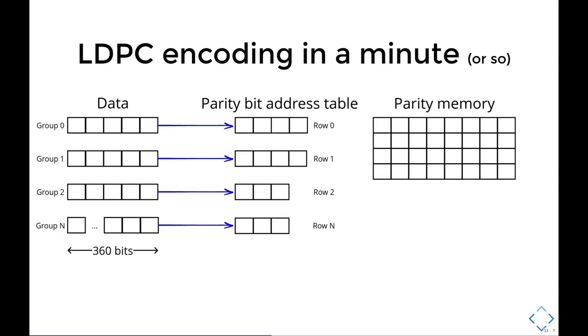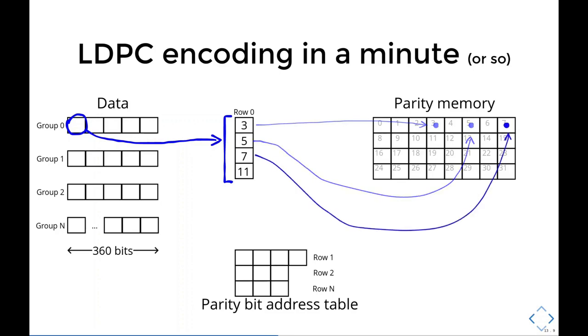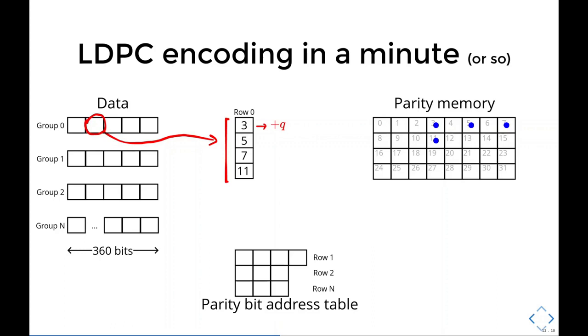The first bit of the first group will use row 0. Bit 0 will then be added, that is XORed in offsets 3, 5, 7 and 11. The second bit also uses row 0, but we add Q to the offset. Q is an integer that depends on the frame length and code rate. For this example, let's assume Q equals 3. So for bit 1, the offsets are gonna be 3 plus 3, 5 plus 3, 7 plus 3, and 11 plus 3.